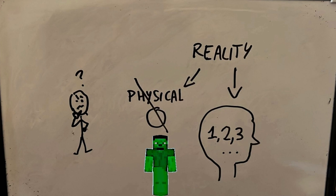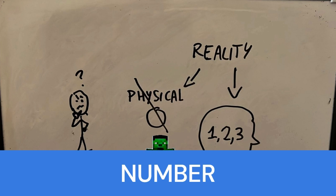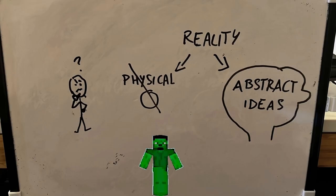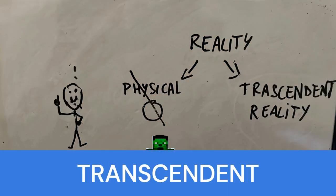Intangible things such as concepts exist in our minds. For example, the concept of number. Numbers are not a physical thing, although they can be represented in it. There is therefore another reality in addition to the physical one, which is the world of concepts and ideas. The Transcendent Reality.